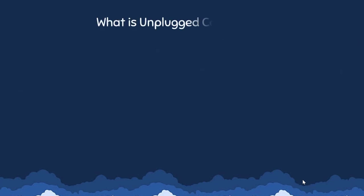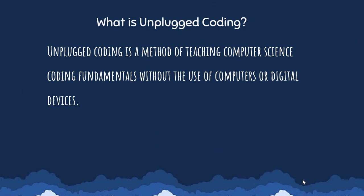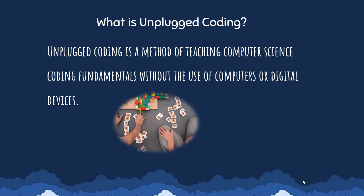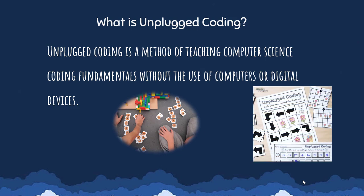Firstly, it is important to know what Unplugged Coding is. Unplugged Coding is a method of teaching computer science coding fundamentals without the use of computers or digital devices. During Unplugged Coding lessons, students learn coding through hands-on activities and exercises that incorporate the use of physical items, puzzles, games, and paper-based coding challenges.